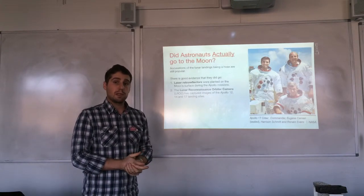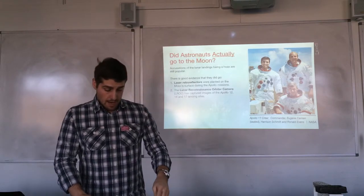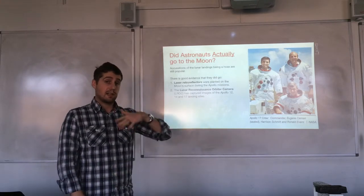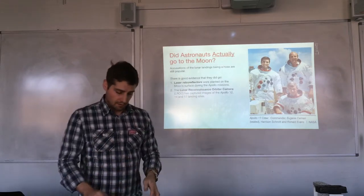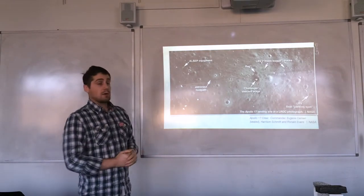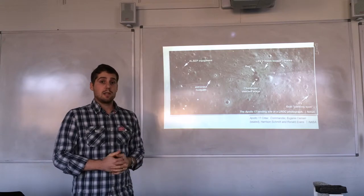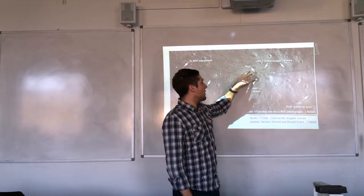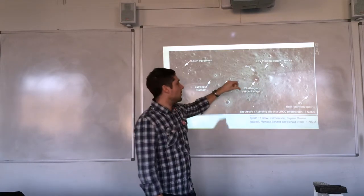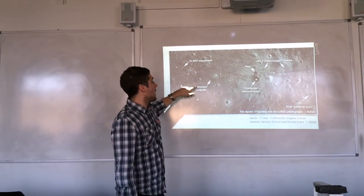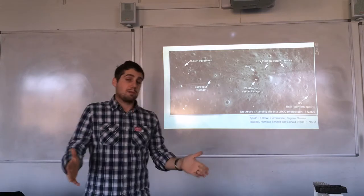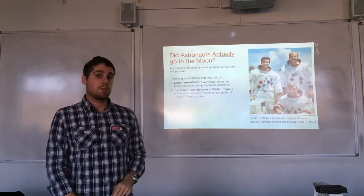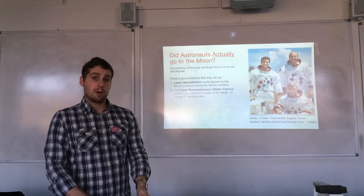Number two: the Lunar Reconnaissance Orbiter Camera, launched around 2011, has captured images of Apollo 12, 14, and 17 landing sites. Here's one of the photos showing the Apollo 17 landing site. You can see a lot of detail in these photos, including the experiment packages that the Apollo astronauts were using, the descent stages, the flag, the lunar roving vehicle, the moon buggy tracks, and even astronaut footpaths. What was making the footpaths if there were no people on the surface of the moon?